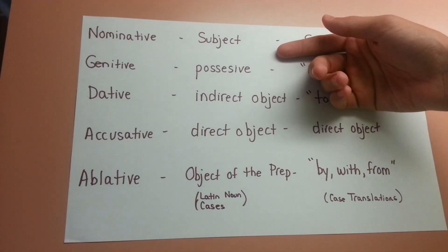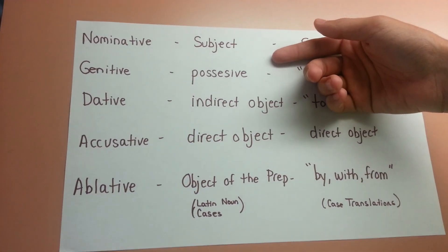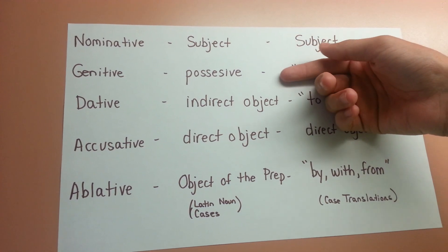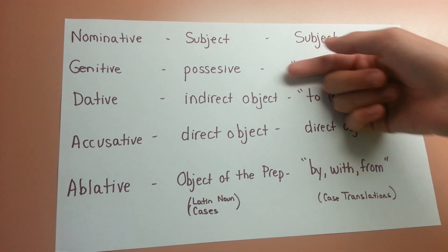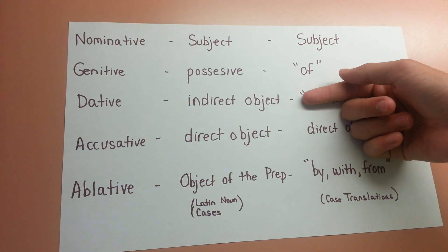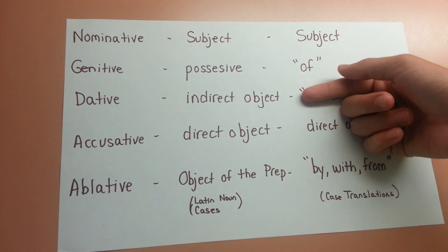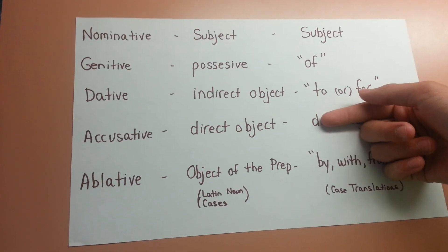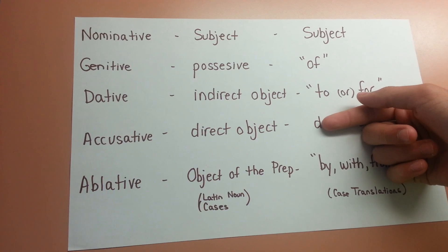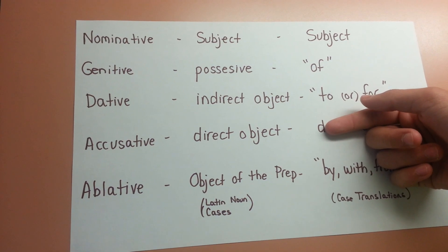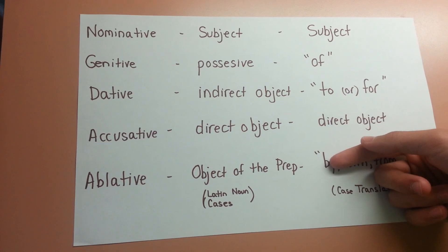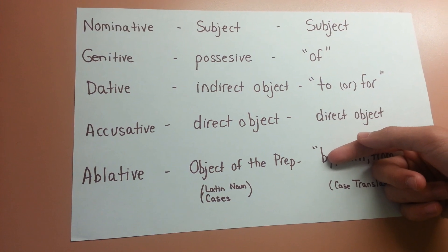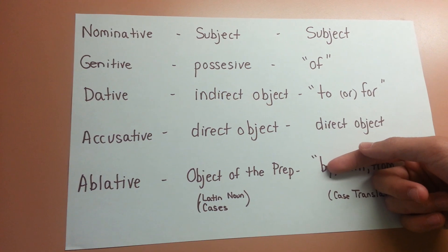Nominative — subject. Genitive — possessive. Dative — indirect object. Accusative — direct object. Ablative case — object of the preposition.